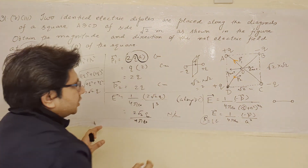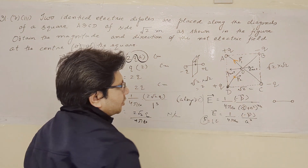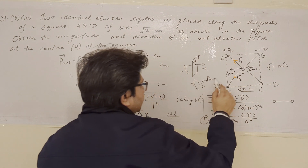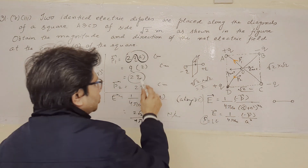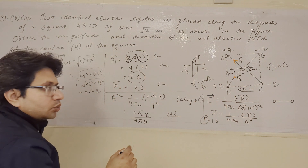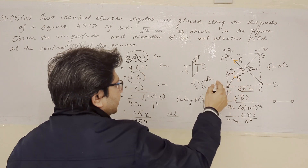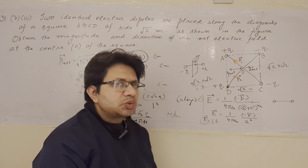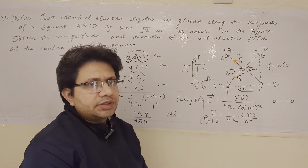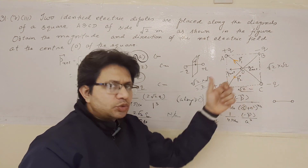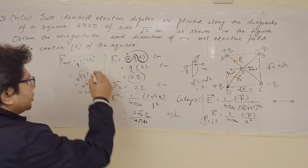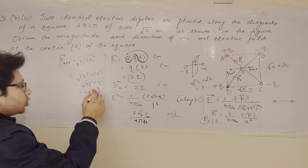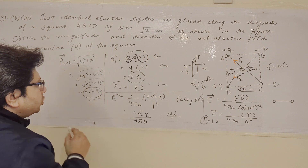Charge multiplied by the distance of the dipole — और distance dipole की diagonal length के बराबर है। Square की side square root 2 meter है, तो diagonal length होगी square root 2 multiplied by square root 2 which is equal to 2। तो P1 की value आएगी 2q, और इसी तरह P2 की value भी 2q। Resultant formula: R equals square root of a² plus b² plus 2ab cos theta। यहाँ theta 90 degree है तो cos theta 0 हो जाएगा। तो P net equals square root of P1² plus P2² equals square root of (2q)² plus (2q)², जो आएगा 2 root 2q।